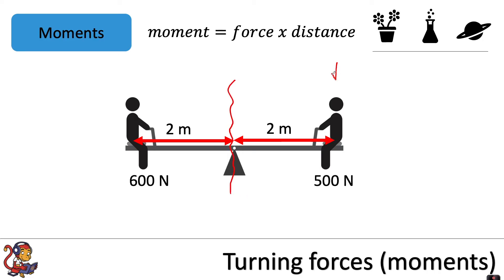We need to look at the right-hand side of the pivot where we've got a person with a weight of 500 newtons, 2 metres from the pivot. Then we look at the left-hand side where we've got a person with a weight of 600 newtons, positioned 2 metres away. For each side, we calculate the moment.